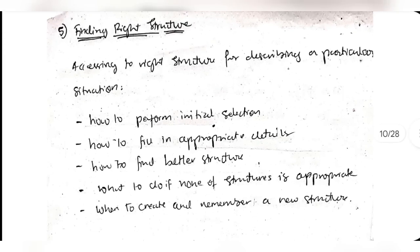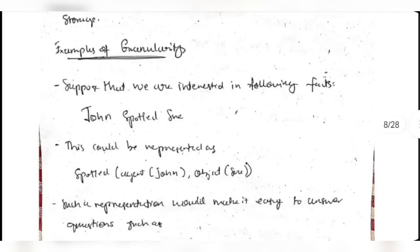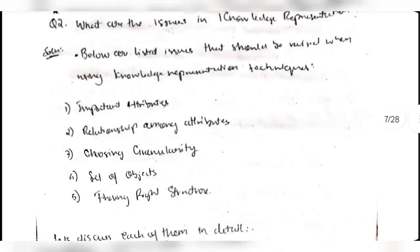The fifth issue is finding the right structure. Key steps include: how to perform the initial selection, how to fill in appropriate details, how to find a better structure, what to do if none of the existing structures is appropriate, and when to create and remember a new structure.